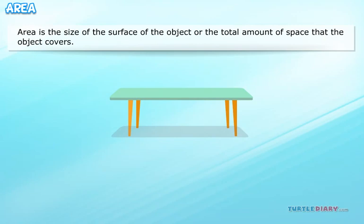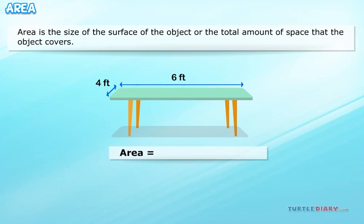How much tablecloth is required for the table given below? We need to find the area to know how much tablecloth is required for the table. Area equals 6 feet times 4 feet equals 24 square feet.